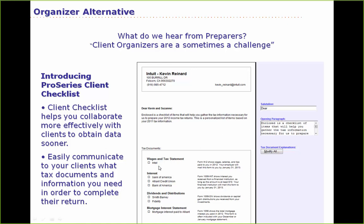The checklist will still show prior W-2s — just like the organizer — all their interest payers, dividend payers, mortgage interest, and so on. But on the right it just says 'attach the W-2,' 'attach the 1099-INT,' 'DIV,' or the 1098. So it's an alternative to your standard organizer.